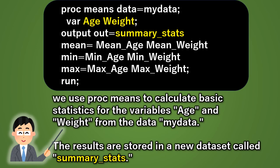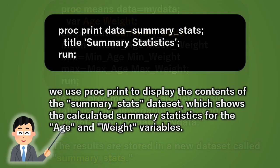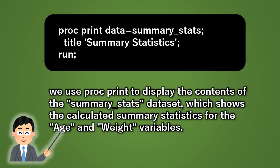The results are stored in a new dataset called summary_stats. We use proc print to display the contents of the summary_stats dataset, which shows the calculated summary statistics for the age and weight variables.